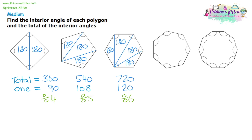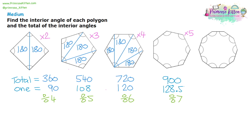Now, is there a way around drawing all those triangles? Looking at the pattern: in the square we had two 180s, in the pentagon three 180s, in the hexagon four 180s. So in the heptagon, we must have five. We do 180 times five, which is 900. It is a seven-sided shape, so we divide by seven. 900 divided by 7 gives us 128.57 degrees.